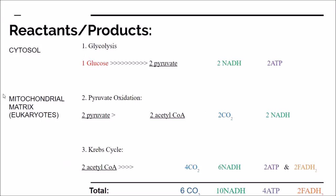Looking at the totality: through glycolysis, one molecule of glucose is turned into two pyruvate molecules, creating two NADH and two ATP. In the pyruvate oxidation reaction, two pyruvates become two acetyl-CoAs plus two CO2, and two NADH are also made — one per pyruvate. Then in the Krebs cycle with two acetyl-CoAs, you make four CO2, six NADH, two ATP or GTP, and two FADH2.